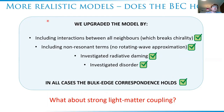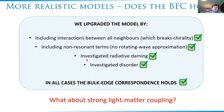We upgraded this model to a more realistic one and asked whether the bulk-edge correspondence holds. We included the effects of interactions between all neighbors, since this is a Coulomb interaction — this also breaks chirality. We included non-resonant terms from the dipole-dipole interaction, i.e., a-dagger a-dagger type terms, without using the rotating wave approximation. We also investigated coupling to a free-photon environment — radiative damping — and the effects of disorder. In all cases, the bulk-edge correspondence holds. The next question was: what does this system look like in the strong light-matter coupling regime?